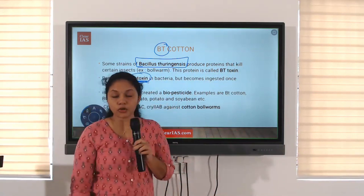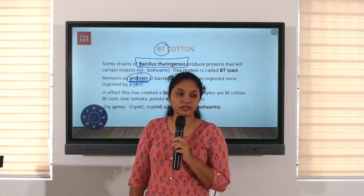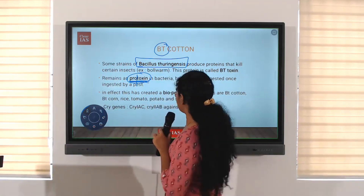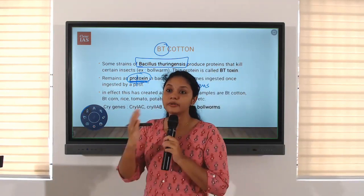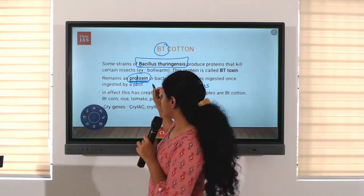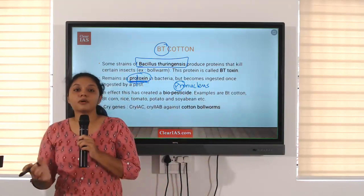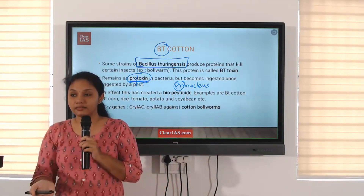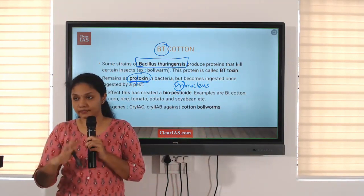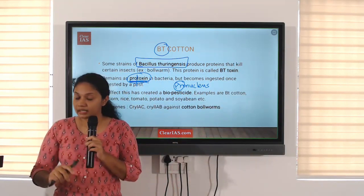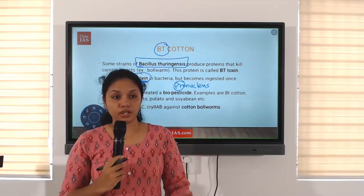What do you mean by protoxin? 'Pro' means early or before — like in pronucleus. So this bacteria contains the toxin in the form of protoxin, meaning it is not in an activated form. This is before activation or before toxin form. That is why it is not affecting the bacteria, or for that matter, it is not affecting the cotton when we introduce it into the cotton.